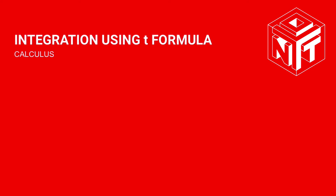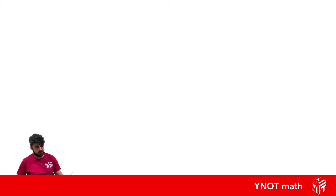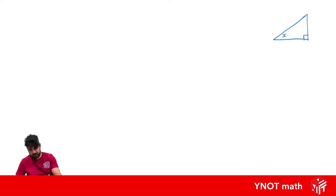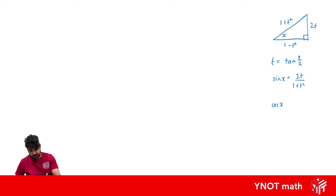Integration using the T-formula. Before we jump into integration with the T-formula, let's have a recap. We have a right-angle triangle with an angle of X, adjacent side 1 minus T squared, and opposite side 2T, giving a hypotenuse of 1 plus T squared. If T equals tan(x/2), we get: sin x = 2T/(1+T²), cos x = (1−T²)/(1+T²), and tan x = 2T/(1−T²).